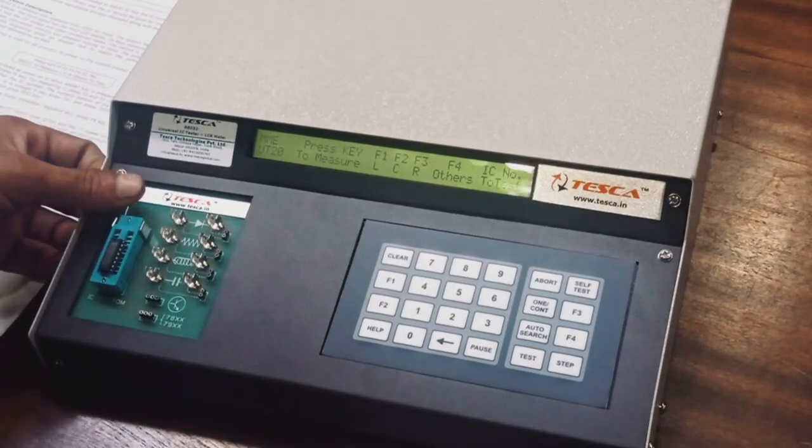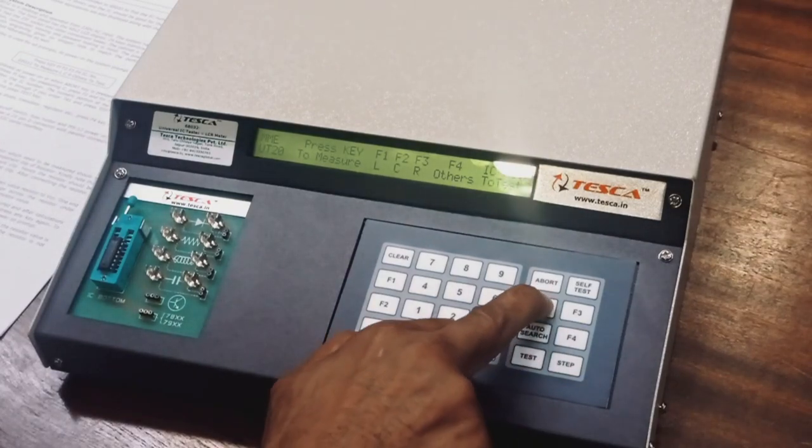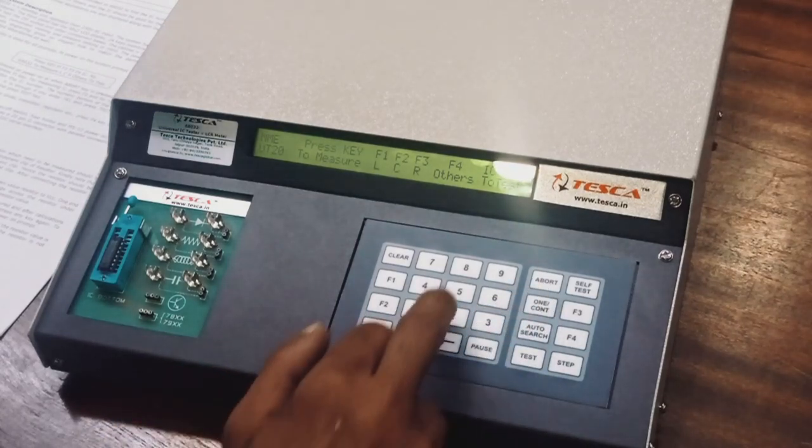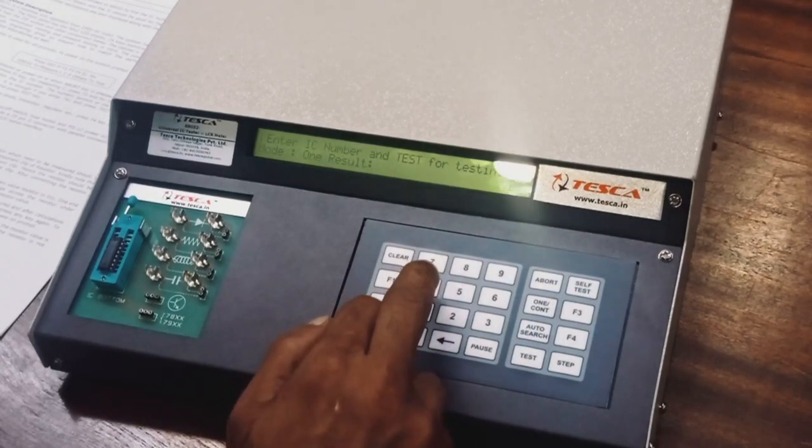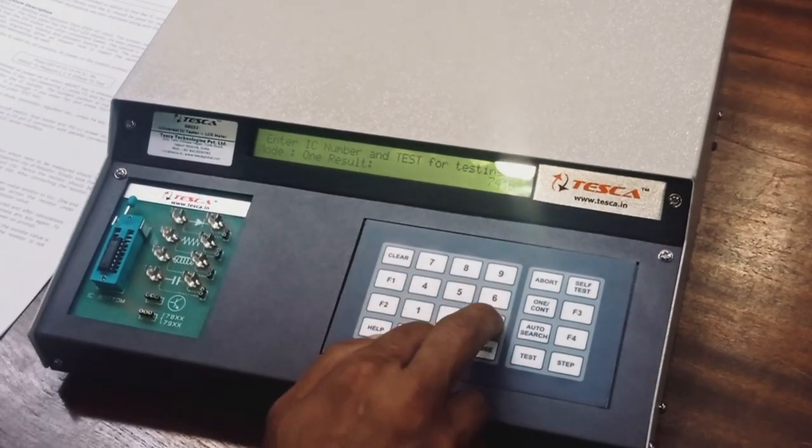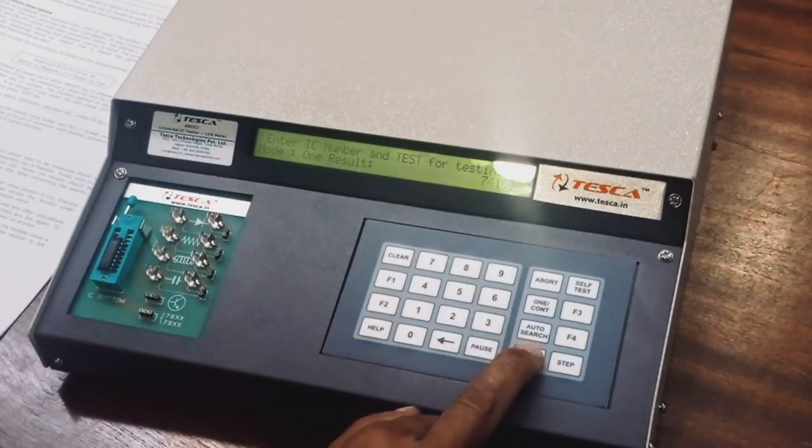Close the ZIF switch and go to one count and test. Put its name: 7, 4, 1, 6, 3. After putting this, press Test option.